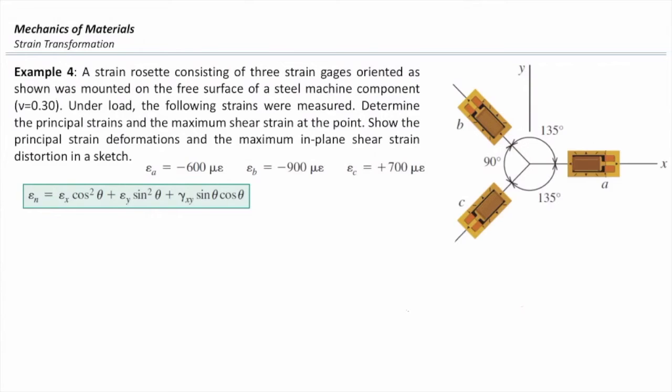the following strains were measured. Strain in A is negative 600. Strain in B is negative 900. And strain in C is positive 700. The question asks, determine principal strains and maximum shear strains for this point.